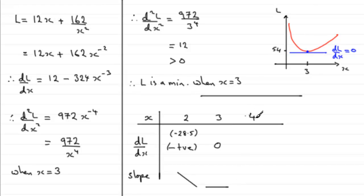What is it at x equals 4? Well, if we substitute x equals 4 into DL by DX, this equation here, then when you do 12 minus 324 over x³, x being 4, you should find you get a positive value, 6.9375, a positive value.